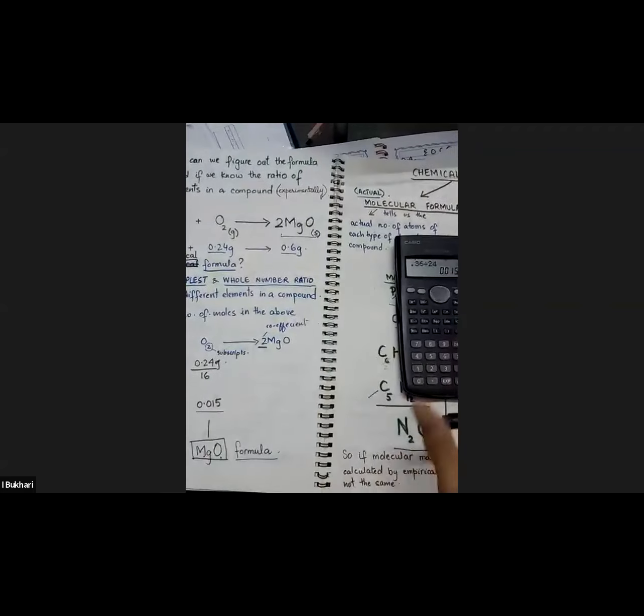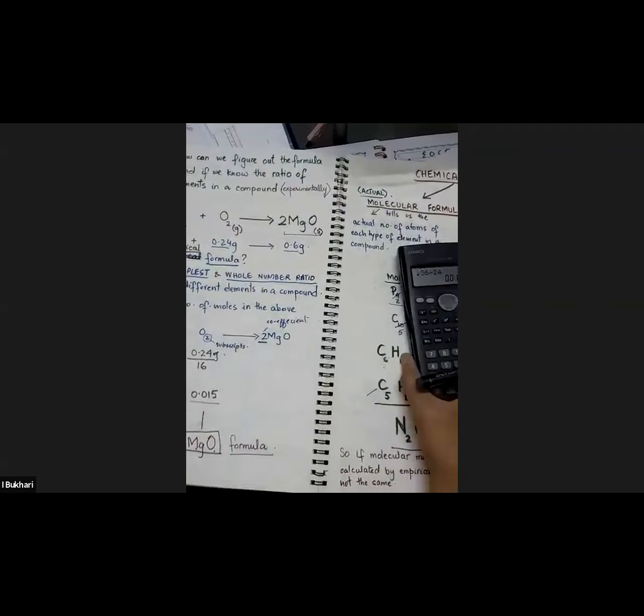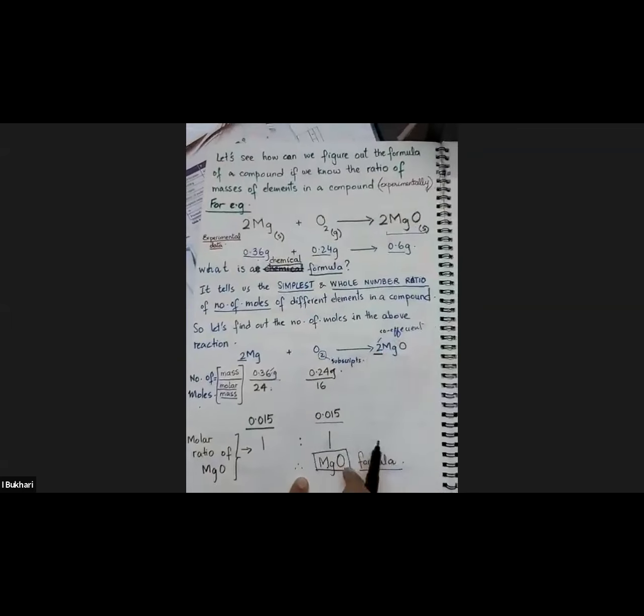0.015 moles of magnesium reacted with oxygen. For oxygen: 0.24 g ÷ 16 = 0.015 moles as well. So I got the same number of moles. The ratio is 1:1, meaning one magnesium reacts with one oxygen. So the formula is magnesium oxide. Let me verify: 0.36 ÷ 24 = 0.015, and 0.24 ÷ 16 = 0.015. The ratio is indeed 1:1. I hope you understood how I got the formula for magnesium oxide.